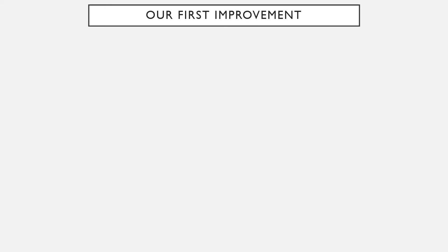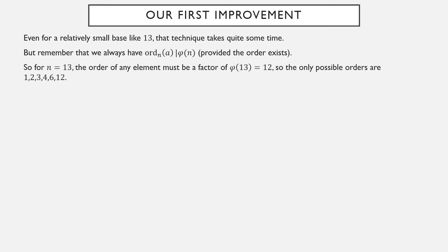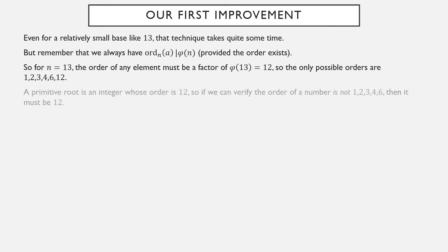That's a pretty bad way to do this problem. Even for a relatively small base like 13, it would have taken a very long time. But remember that the order mod n of a is always a factor of phi of n. So for n equals 13, the only possible orders are factors of 12: 1, 2, 3, 4, 6, and 12.